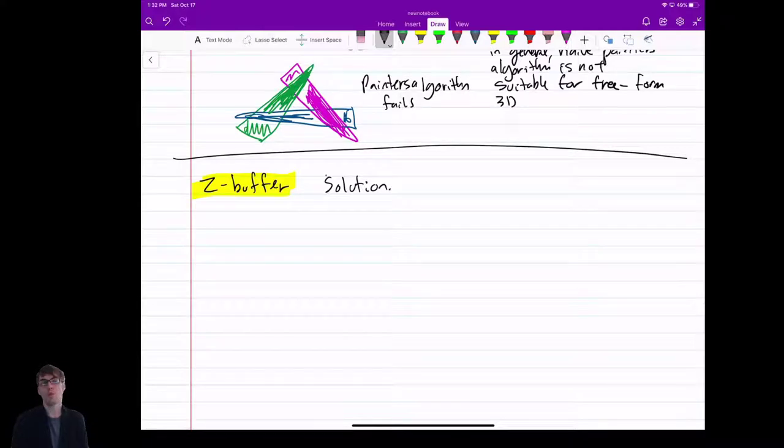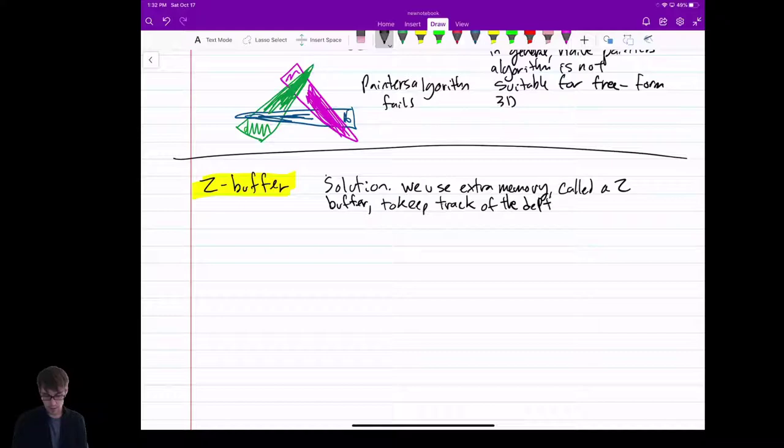We just use more memory. So we use extra memory called the Z Buffer to keep track of the depth of everything. And here's where it gets, here's the interesting part.